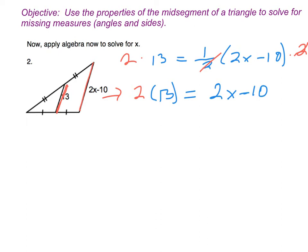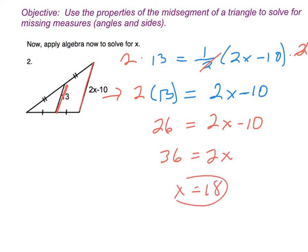From here it's just an algebra problem. 2 times 13 is 26, equals 2x minus 10. Adding 10, I get 36 equals 2x. Dividing by 2, x is 18.